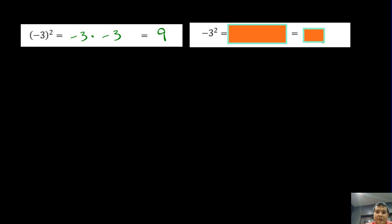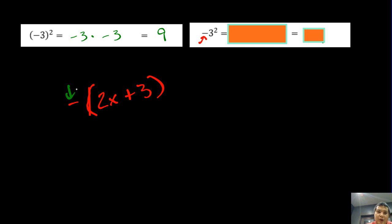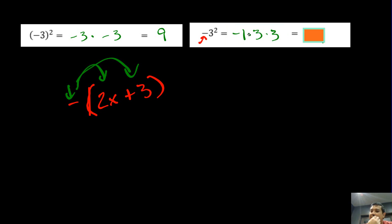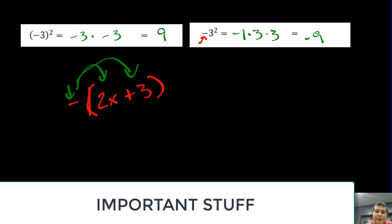The negative on the outside is not the same — it's outside the parentheses. Just like with negative 2x plus 3 where we treat the negative like a negative 1 and distribute it, here this negative is like a negative 1. So we have negative 1 times 3 times 3, which gives us negative 9. The square only applies to the 3, not to the negative, unless the negative is inside the parentheses.